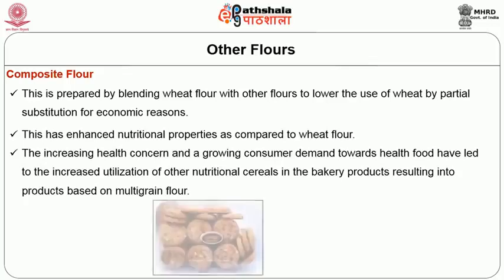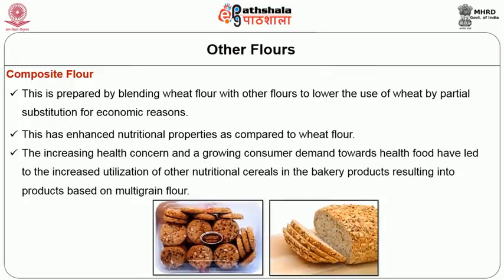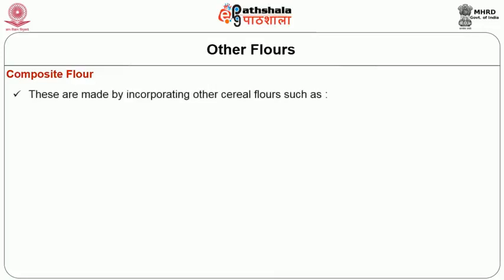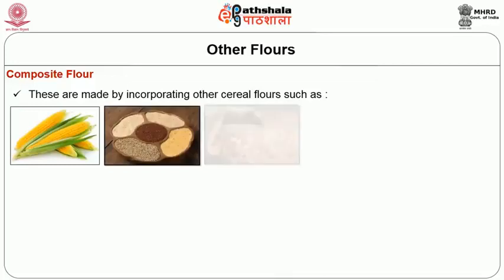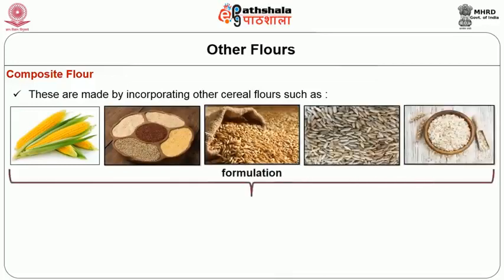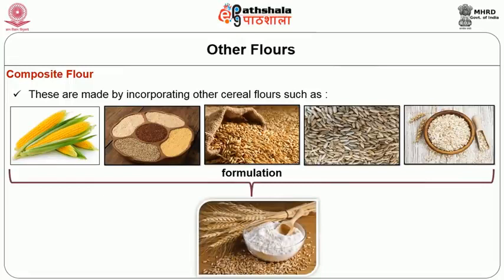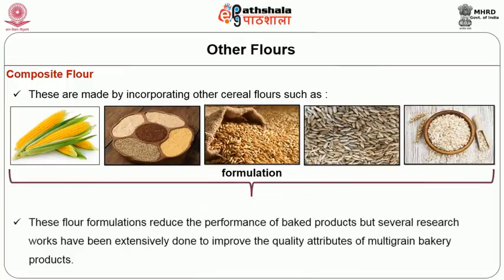Multigrain biscuits, bread, etc., are the most common items at the grocery store and have high consumer demand. These are made by incorporating other cereal flours such as maize, millet, barley, rye, etc., in the formulation in addition to wheat flour. Although these flour formulations reduce the performance of baked products, several research works have been extensively done to improve the quality attributes of multigrain bakery products.